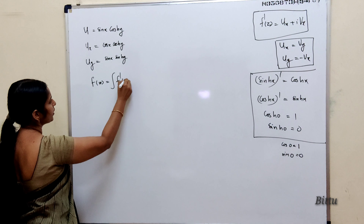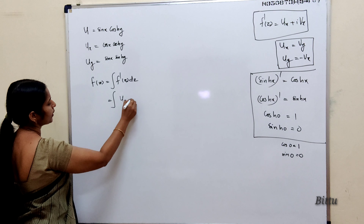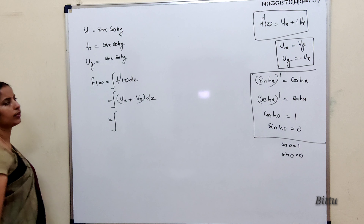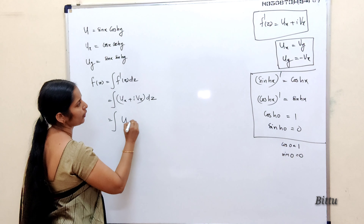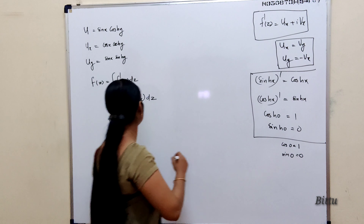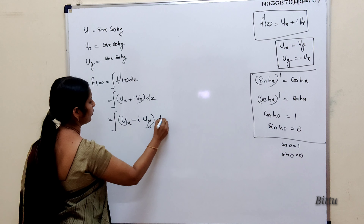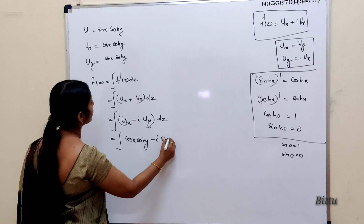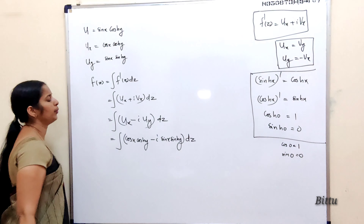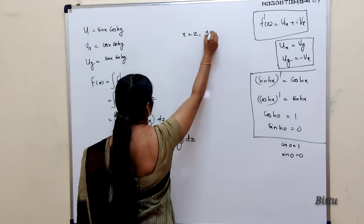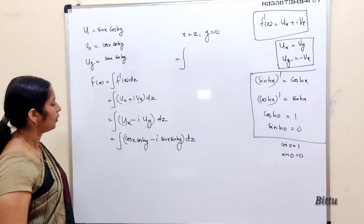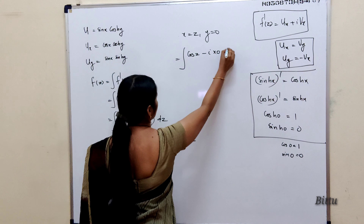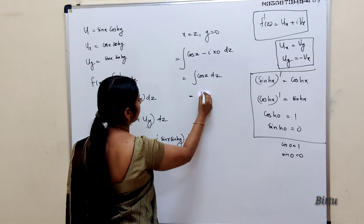We know f'(z) = u_x + i·v_x. Since u is given, we have u_x and u_y, so we replace v_x using Cauchy-Riemann equations: v_x = −u_y. So f(z) = integral of (u_x − i·u_y) dz = integral of (cos(x)cosh(y) − i·sin(x)sinh(y)) dz. Next, put x = z and y = 0: cosh(0) = 1, sinh(0) = 0. So the integrand becomes cos(z). The integral of cos(z) is sin(z), giving f(z) = sin(z) + c.